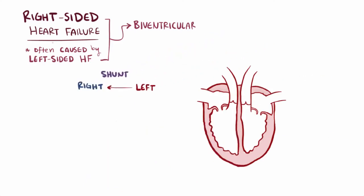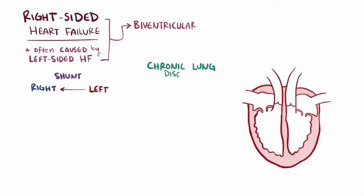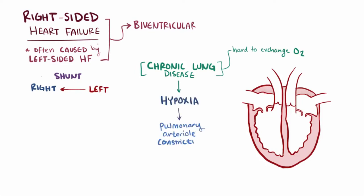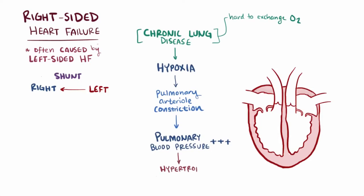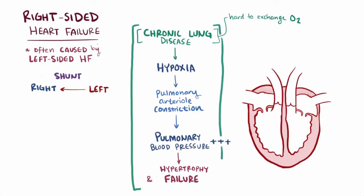Another potential cause of isolated right-sided failure is chronic lung disease. Lung diseases often make it hard to exchange oxygen, and in response to low oxygen levels or hypoxia, the pulmonary arterioles constrict, which raises the pulmonary blood pressure. This makes it harder for the right side of the heart to pump against and can lead to right-sided hypertrophy and heart failure. When chronic lung disease leads to right-sided hypertrophy and failure, it's known as cor pulmonale.